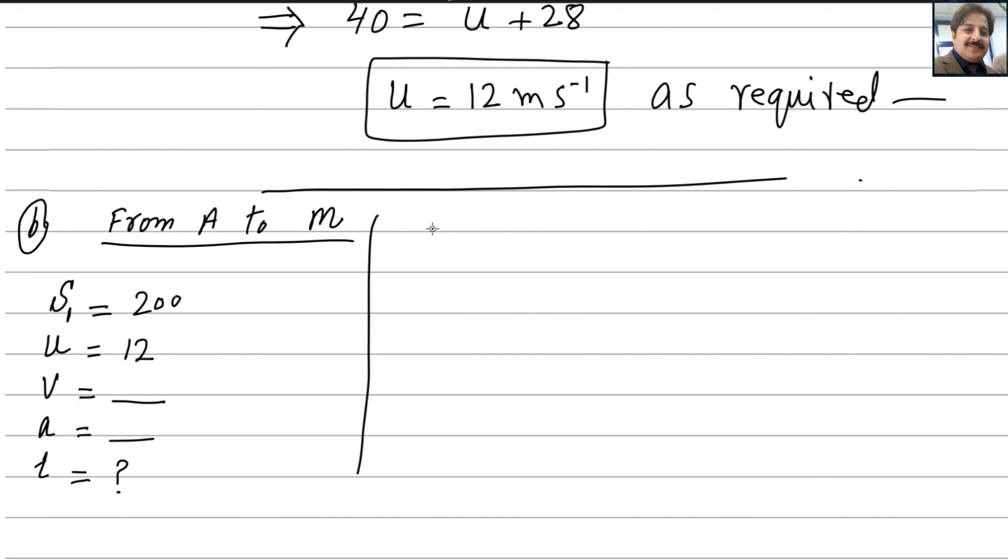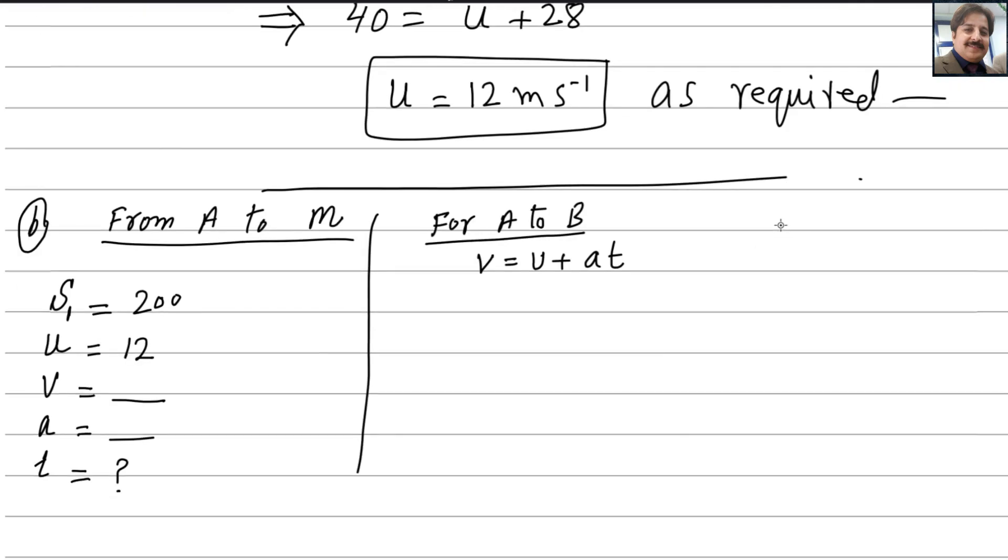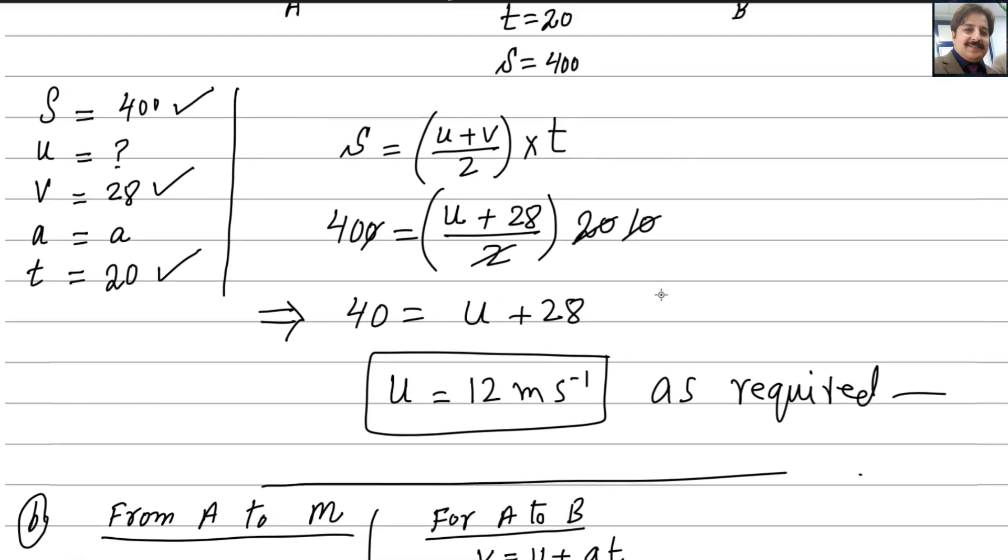We can write for A to B, we can apply the formula v equals u plus at. For A to B, v is 28, u is 12, acceleration we need to find, and time taken is 20. From here we can find acceleration easily. 28 minus 12 is 16. A equals 16 divided by 20, which is 0.8.